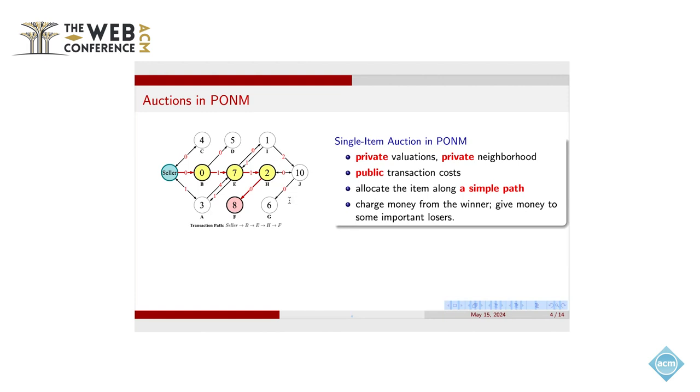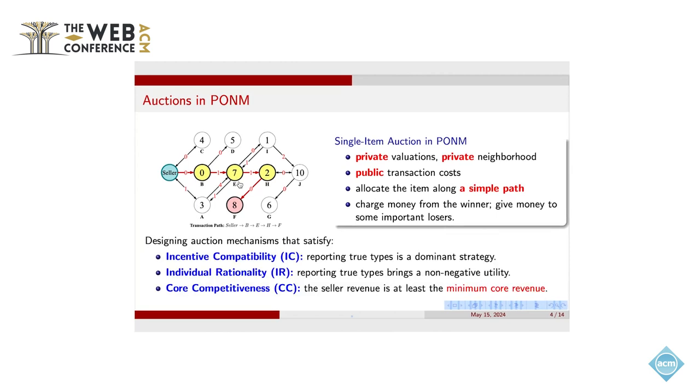So the allocation in this market is different from the traditional ones because now we need to find some transaction paths. And the final winner is identified on this transaction path. On the other hand, each buyer along this transaction path has some potential to win some reward.